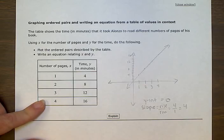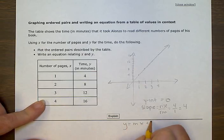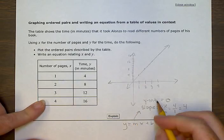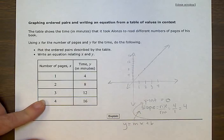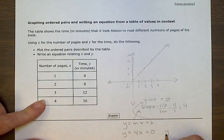That gives me the starting point to writing the equation. So we can write it like a y equals mx plus b equation. M is the slope, b is the y-intercept. So now we can write y equals 4x plus 0, or we could write just y equals 4x.